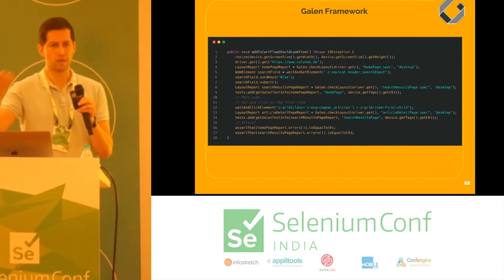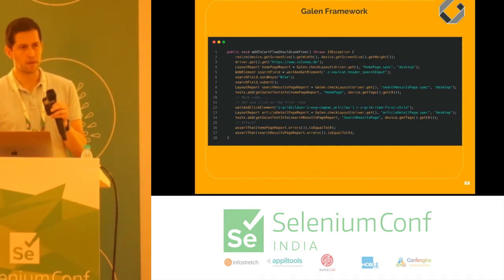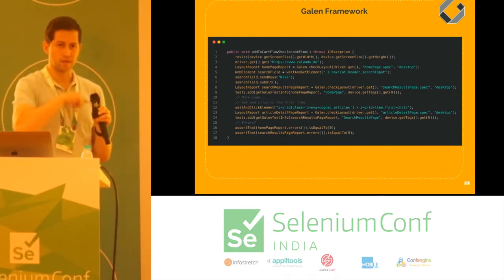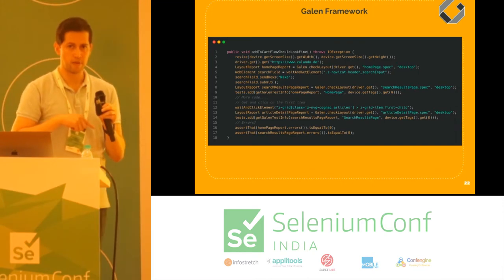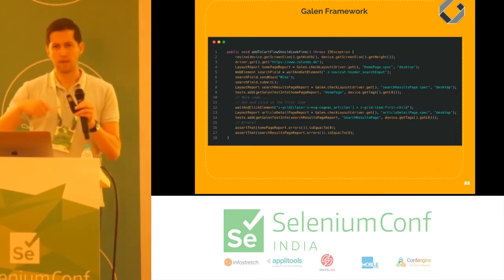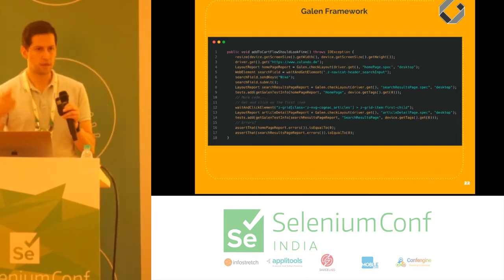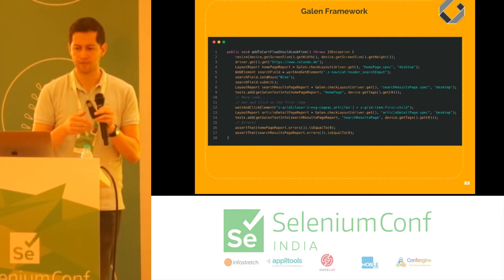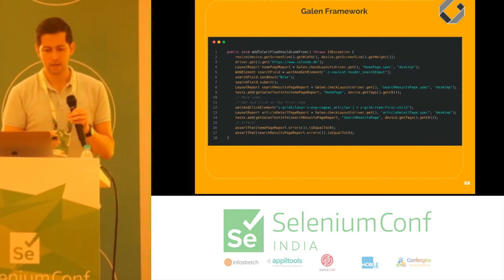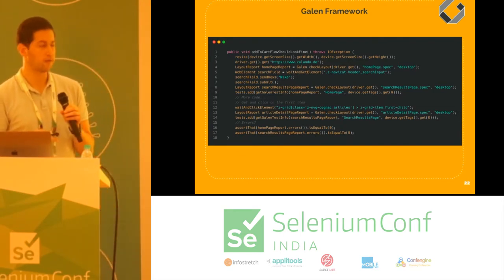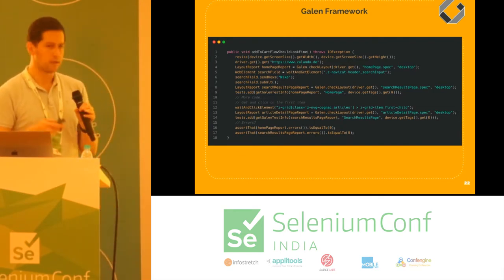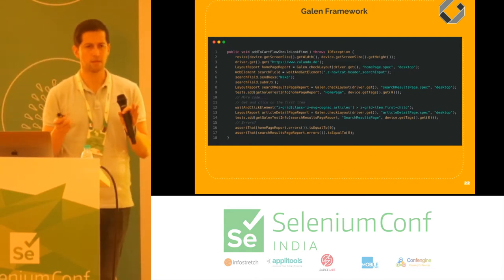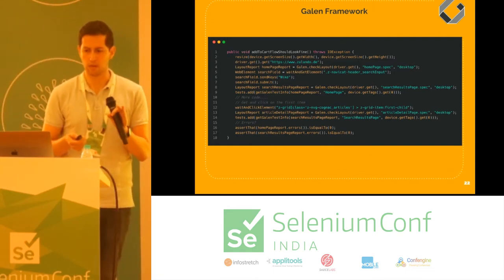Galen applies all these rules, checks them, and reports something back. At the end, on lines 16 and 17, I just do an assertion that there were no errors. It's quite simple.